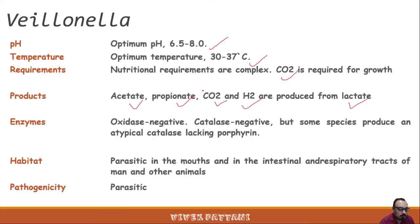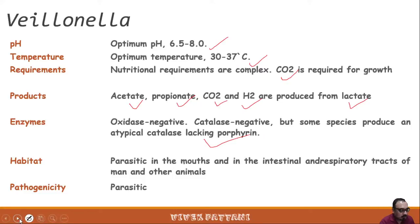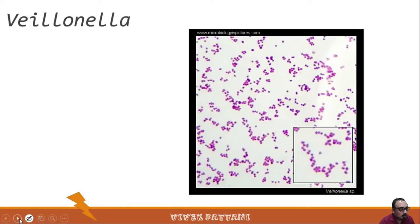Veillonella is oxidase negative and catalase negative, but some species do produce an atypical catalase which lacks a porphyrin in the structure. Their habitat is parasitic in mouths and in the intestinal and respiratory tracts of humans and other animals. Pathogenicity: they are parasitic to human beings as well as various ruminants.